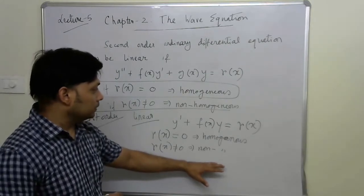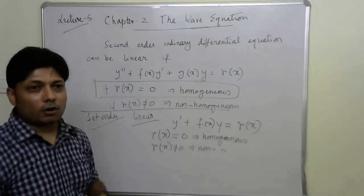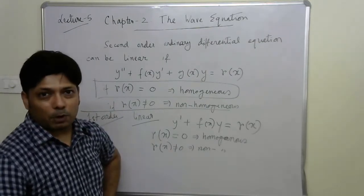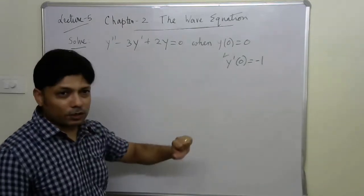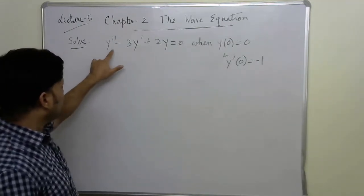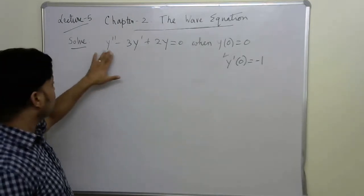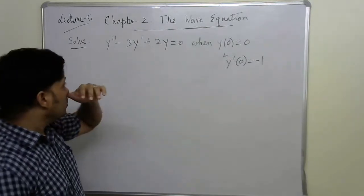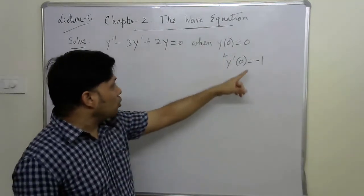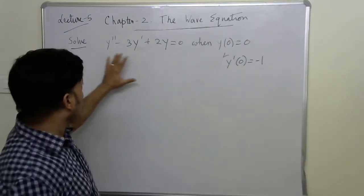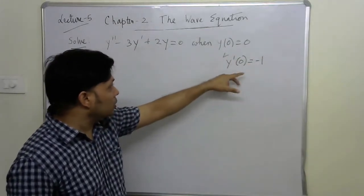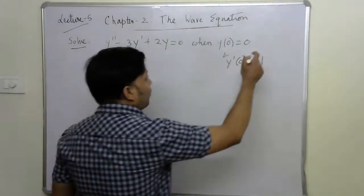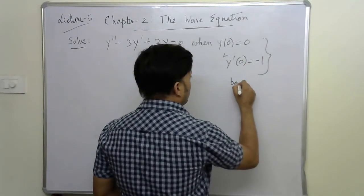We will now practice solving some second order linear homogeneous ordinary differential equations. For example: y'' - 3y' + 2y = 0. This is a second order, ordinary, linear, and homogeneous equation. It also comes with boundary conditions: y(0) = 0 and y'(0) = -1. These type of conditions are called boundary conditions.